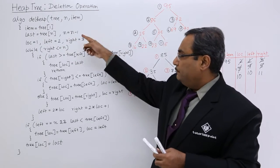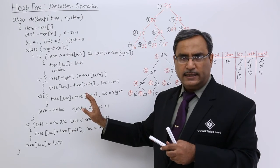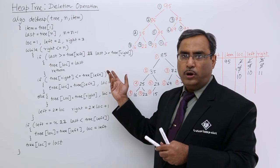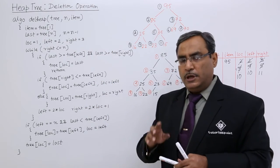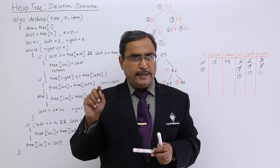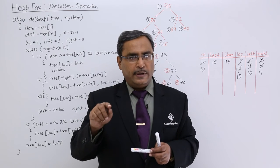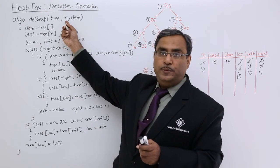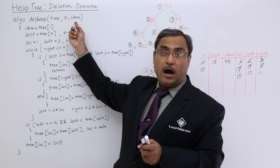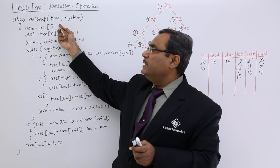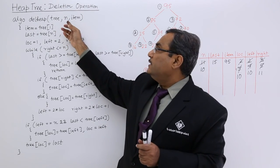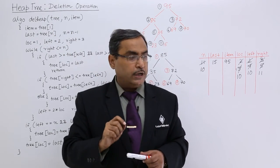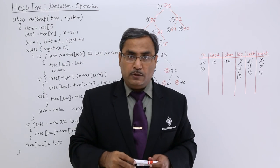This algorithm is written in C-like or Java-like syntax and can easily be converted to a program — this is known as del_heap. Remember: in ins_heap, n is incremented by 1; in del_heap, n is decremented by 1. To implement this in C, n and item should be passed by reference (call by reference), and tree is the array name. I have discussed each line in detail with proper tracing. Hope you have got the logic. Thanks for watching.